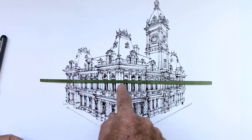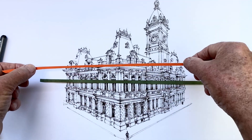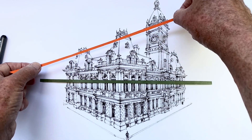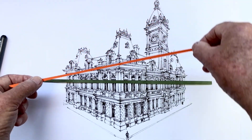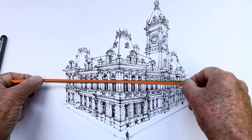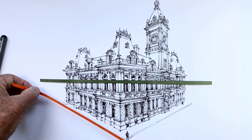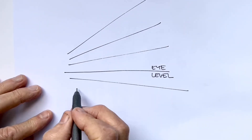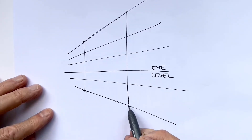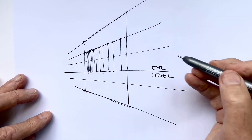Horizontal and parallel lines, when viewed straight on, appear to slope upwards at increasing angles as they move above the eye level of the viewer, or slope downwards as they move below the eye level. This angling above and below eye level creates a fan-shaped pattern of lines.